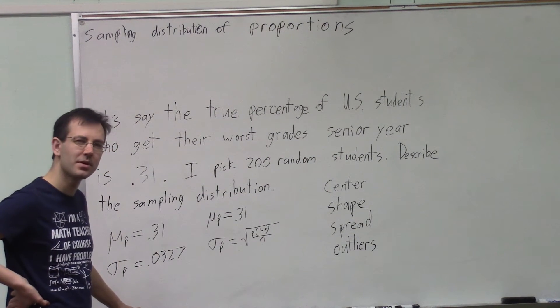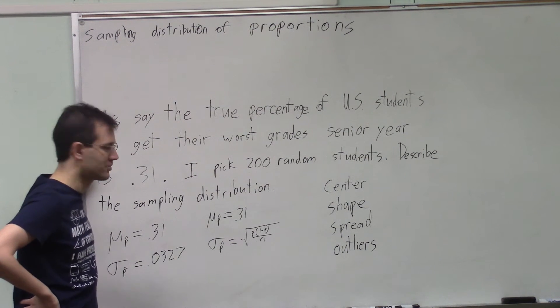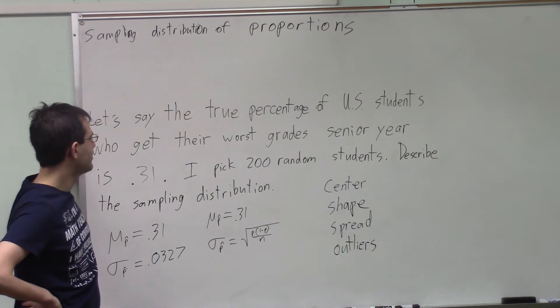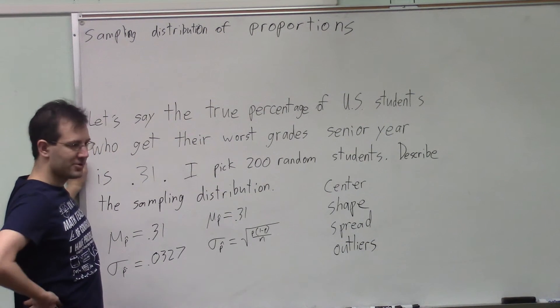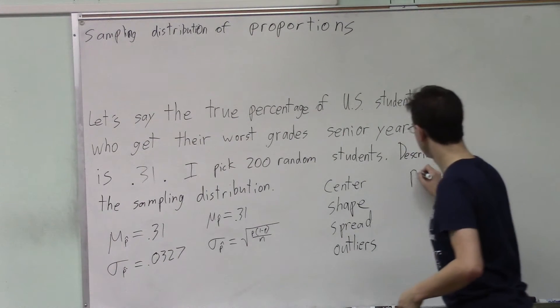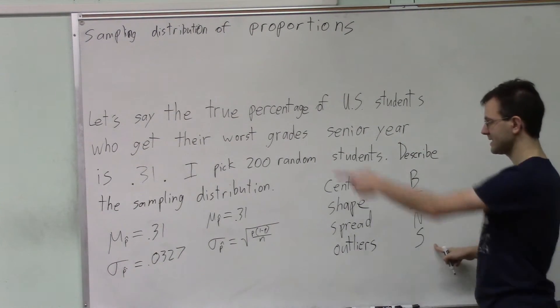But shape, well, what sort of distribution is this? This is a binomial distribution, right? The binomial distribution is a situation where the percent chance of success is the same each time, which it is, 31%, because I'm taking a random sample of 200 students.